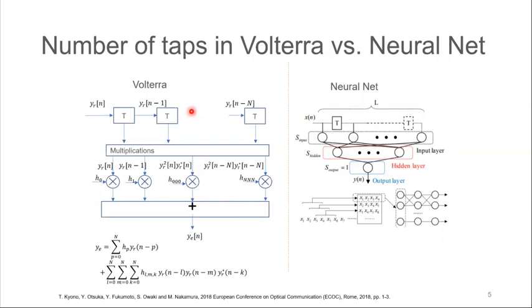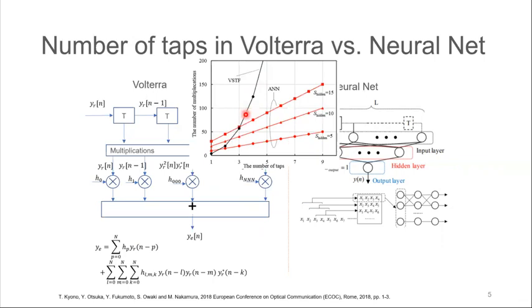Also, when the channel response is complex, the AI, especially neural network, have more advantages. Here is a comparison of the computation complexity of Volterra filter and the neural network. As we can see from the equation that the number of multiplication in the Volterra filter increased proportionally to the cube of the number of required taps, basically like this. Well, for the neural network, the number of multiplication grows linearly. So when the system has lots of taps, the neural network has a much lower computation complexity.